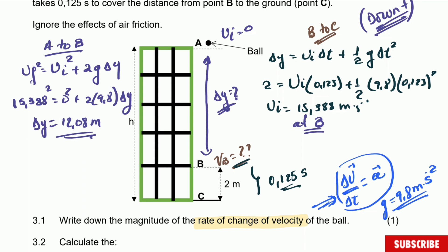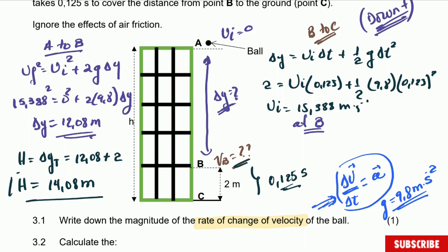The total displacement will be the height of the building. So the height of the building equals the total displacement, which is 12.08 plus 2 meters (the distance from B to C). Therefore the height of the building is equal to 14.08 meters. That is the answer — the question is not that bad, but a little more involved.